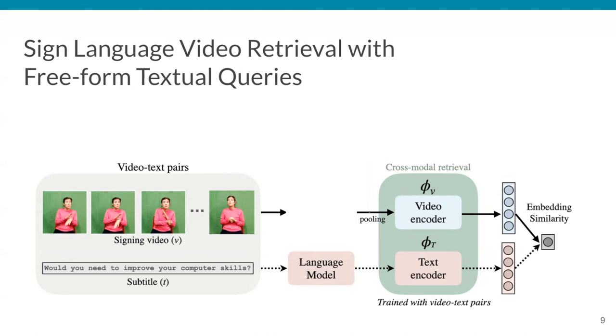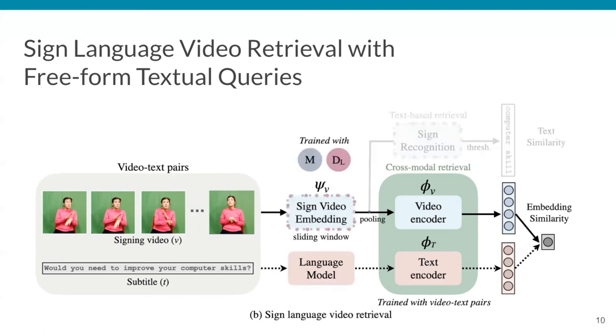On the other hand, the sign video encoder consists first of an initial sign video embedding, which was initialized as an i3D network. The output of it is temporally aggregated to a fixed-size vector and then projected to the cross-modal embedding space.